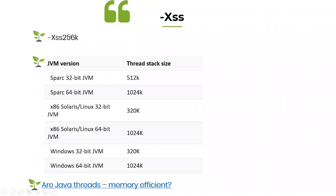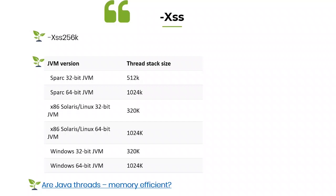XSS is the third important JVM argument you want to pass to your application. If you do not set the XSS value, the default value varies by the underlying operating system and the JVM version you are running on. For example, on a 32-bit JVM the XSS size is 512 kilobytes, and on a 64-bit JVM it is 1024 kilobytes. You want to make sure you set the appropriate thread stack size for your application. There is also a linked blog discussing whether Java threads are memory-efficient, which you can reference for more detail. Friends, thank you for watching part 2 of 7 JVM arguments of highly effective applications.